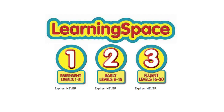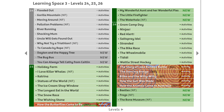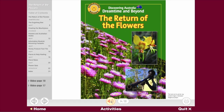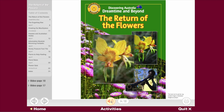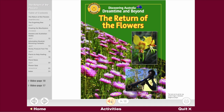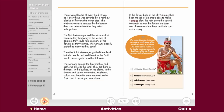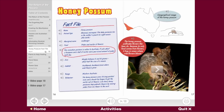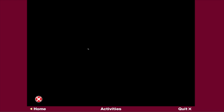Now let's look at Learning Space 3 for fluent level readers. Learning Space 3 includes Indigenous titles written to support the cross-curriculum priority that focuses on Aboriginal and Torres Strait Islander histories and cultures. These titles start with a dreaming story, and the rest of the book explores related topics. There is narration if the student wants the text read to them. Information is presented in a range of different text types, and embedded video clips are also used in the e-books to extend student understanding.